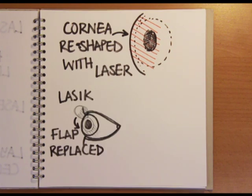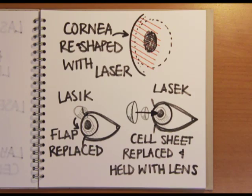Afterwards with LASIK the flap of cells is replaced where it naturally sticks back down and in LASEK the removed sheet of cells is replaced and held down with a special contact lens. The whole procedure only takes a few minutes and recovery time is short.